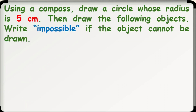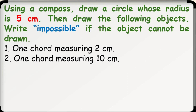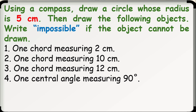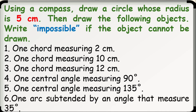For your drill, do the following. Using a compass, draw a circle whose radius is 5 centimeters, then draw the following objects. Write impossible if the object cannot be drawn. Number 1: one chord measuring 2 centimeters. Number 2: one chord measuring 10 centimeters. Number 3: one chord measuring 12 centimeters. Number 4: one central angle measuring 90 degrees. Number 5: one central angle measuring 135 degrees. And lastly, one arc subtended by a central angle that measures 35 degrees.